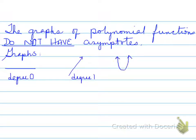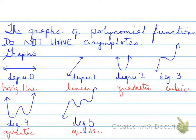The graphs of different polynomial functions are shown here. A degree of zero is a horizontal line. A degree of one is a slanted line, so it has some sort of slope. A quadratic has a degree of two, a cubic has a degree of three, a quartic a degree of four, and a quintic a degree of five.